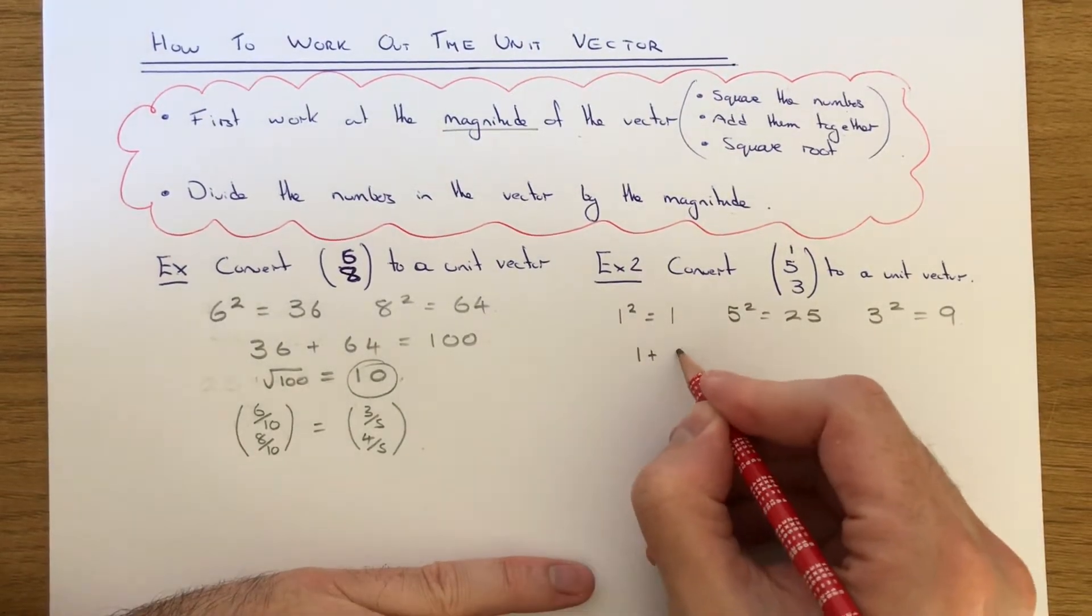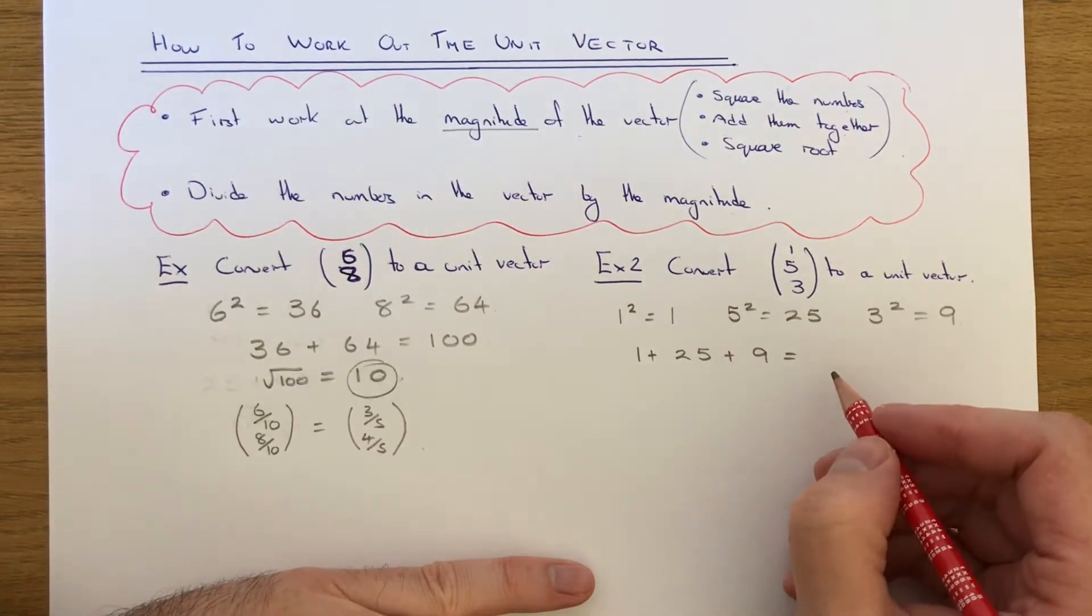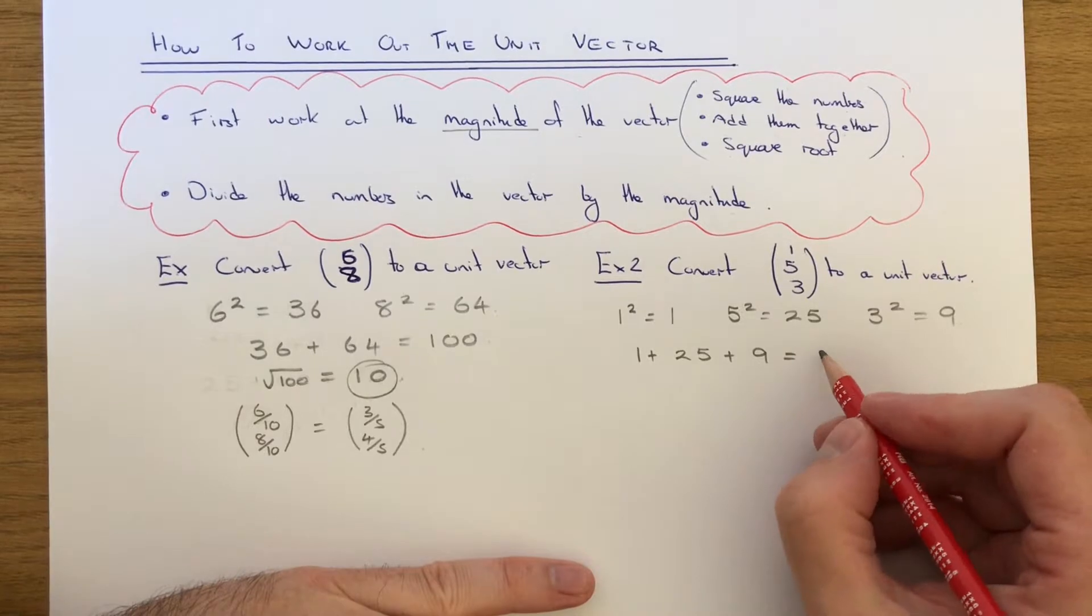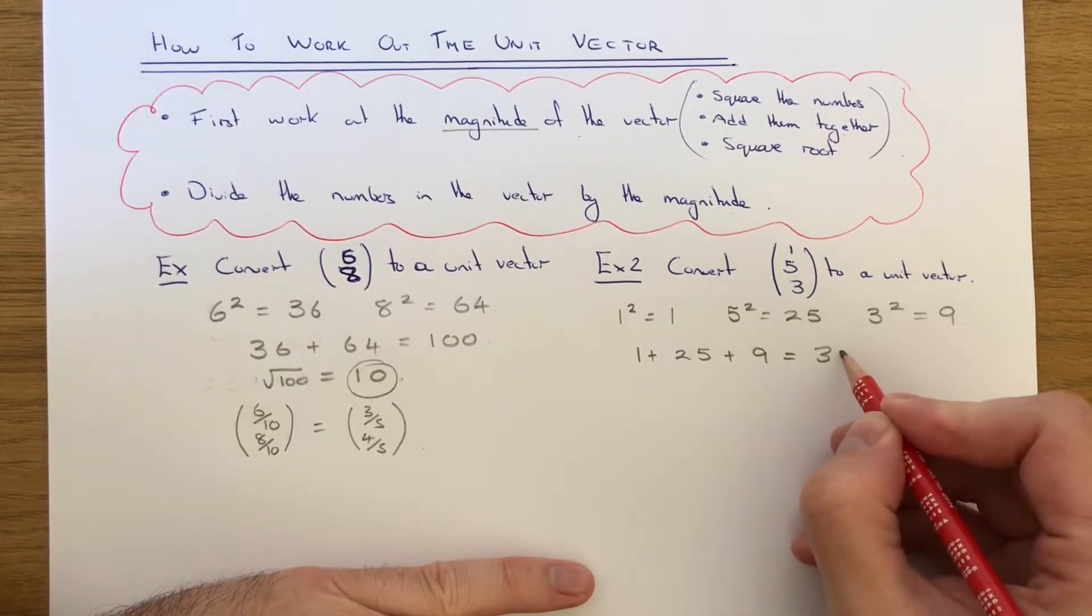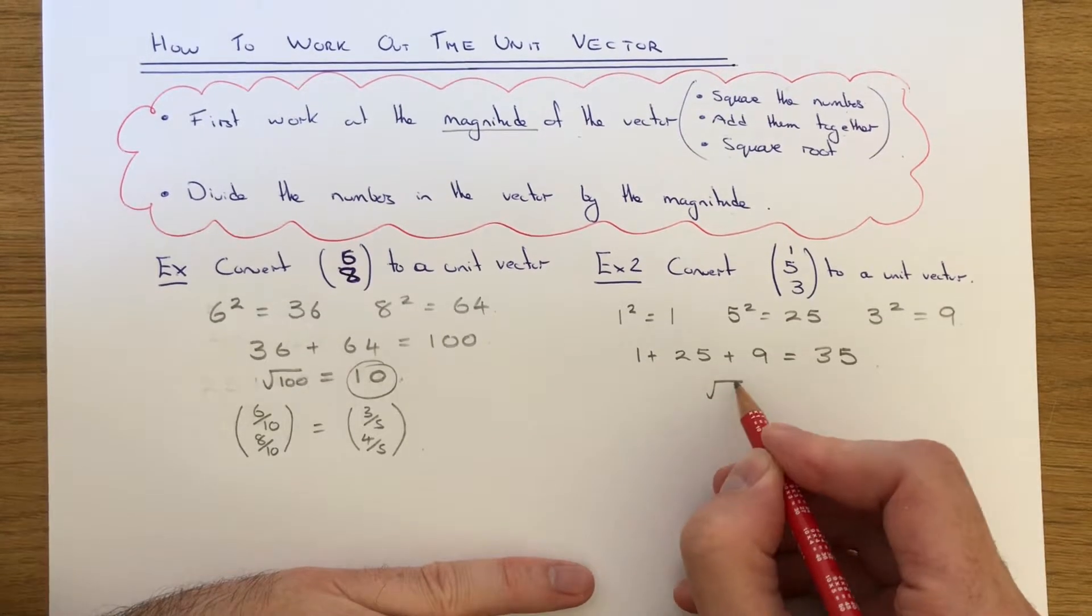If we add these squares together, that will give us 35, and then we just need the square root of 35.